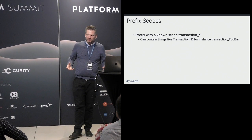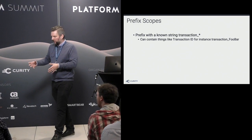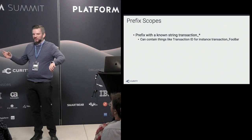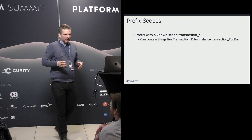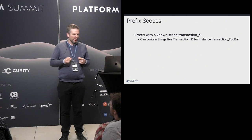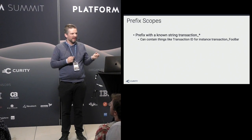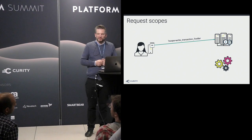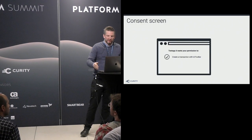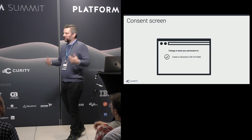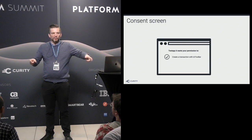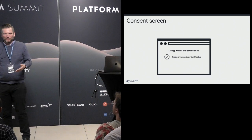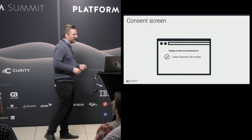So we want to use prefix scopes. You configure on the server that this client is allowed to ask for scopes that start with 'transaction_something.' Whatever comes after that prefix is allowed, and we can treat it as a transaction ID. So if a client asks for the scope 'write_transaction_foobar,' we can show the user a consent screen saying this client is asking to create the transaction with ID foobar. That's better because you're consenting to this actual transaction — but what does it stand for? We want to know why we're consenting.